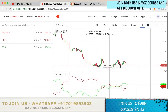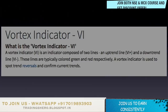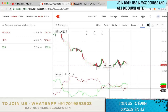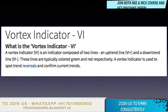Now let's talk about the vortex indicator. A vortex indicator, also called VI, is an indicator composed of two lines — as you can see here, a red and a green line. The uptrend line is VI plus and the downtrend line is VI minus, colored green and red respectively. The vortex indicator is used to spot trend reversals and confirm current trends.